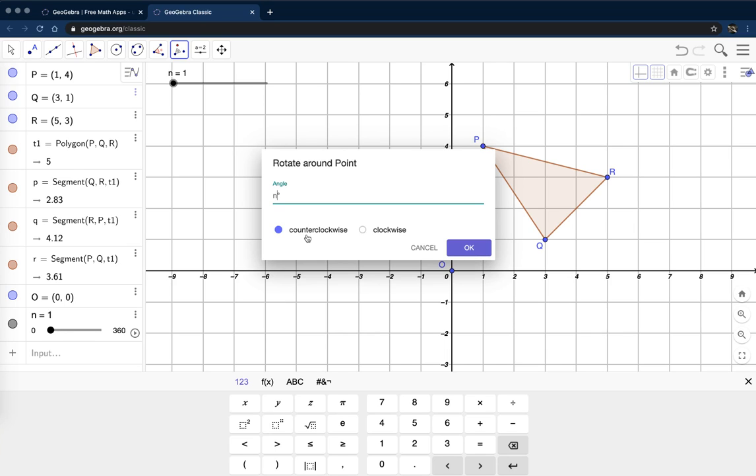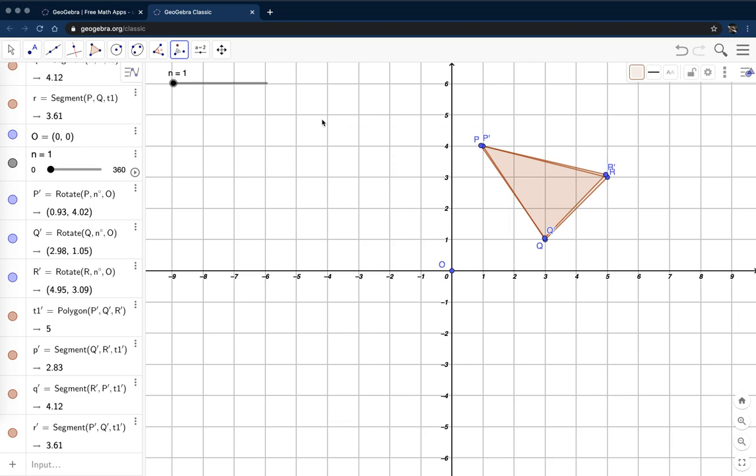and it's going to go counterclockwise because geometric rotations are, by default, counterclockwise. But you can choose clockwise if you wanted to in your construction. And I click OK. And now, again, I choose my arrow tool so I don't construct anything I don't want yet.